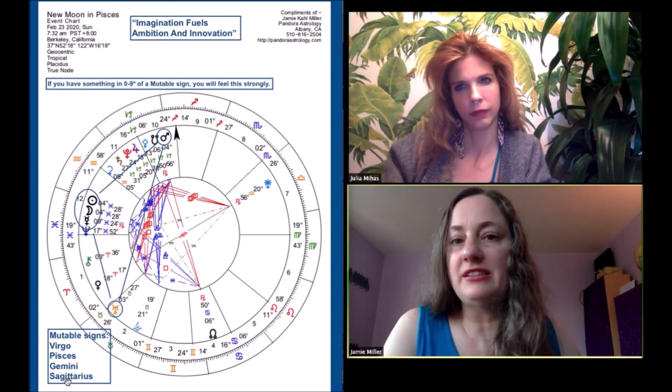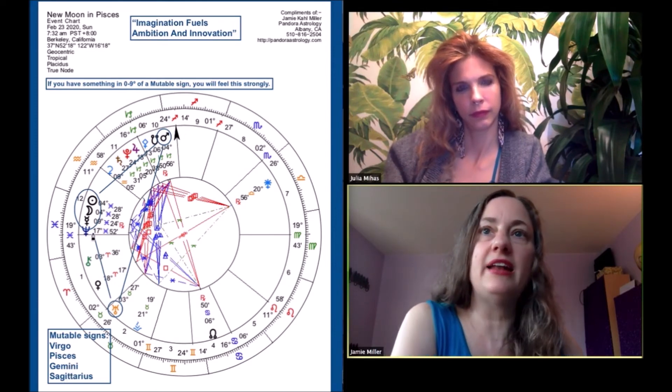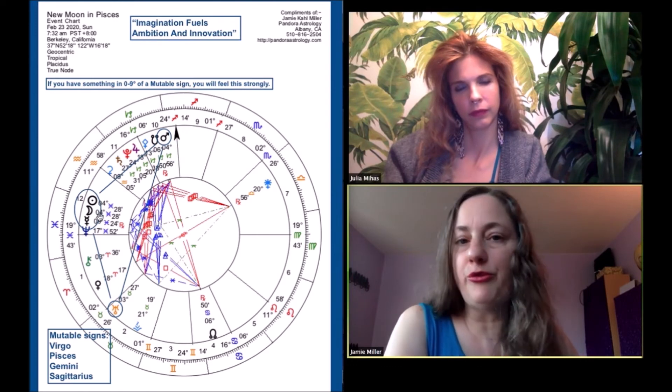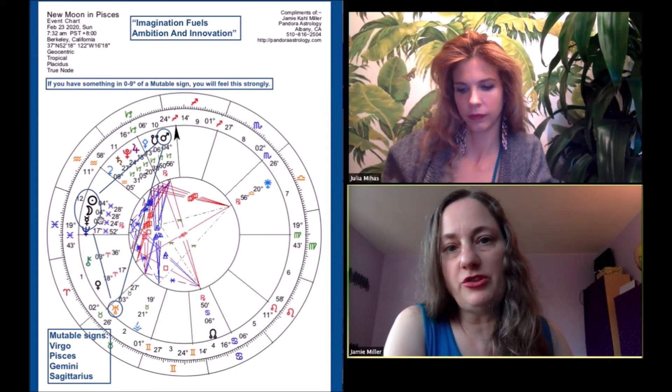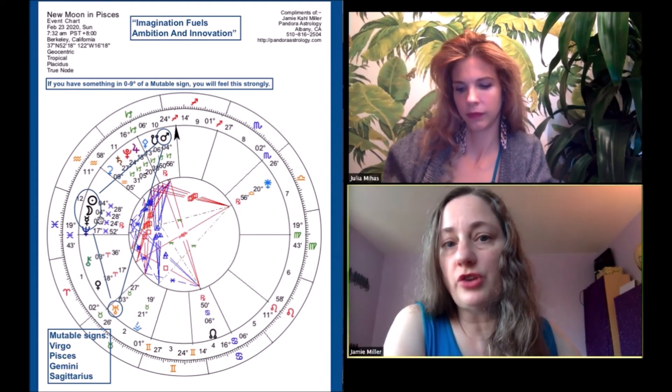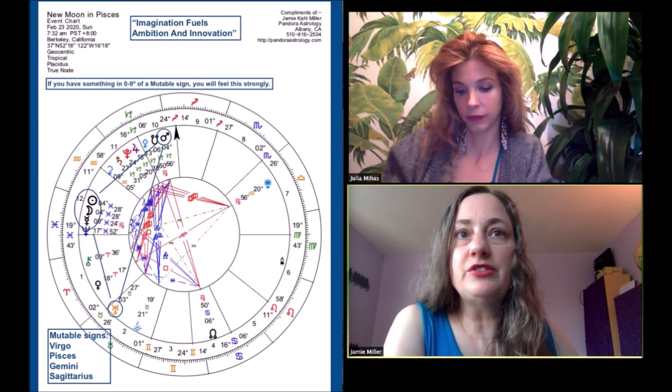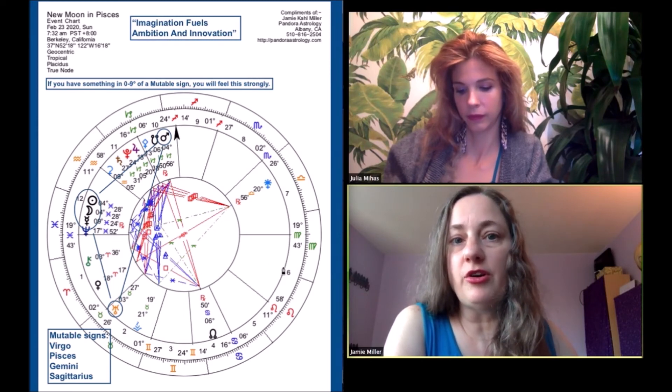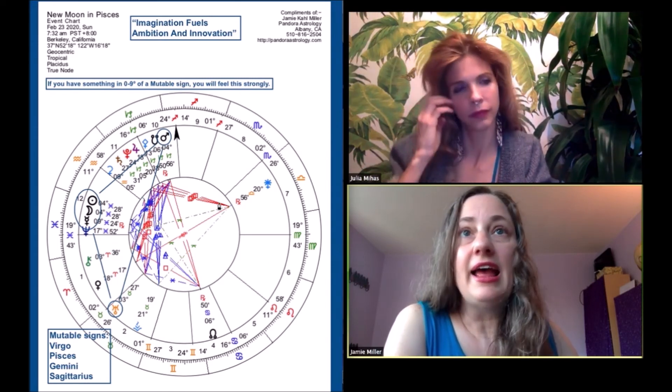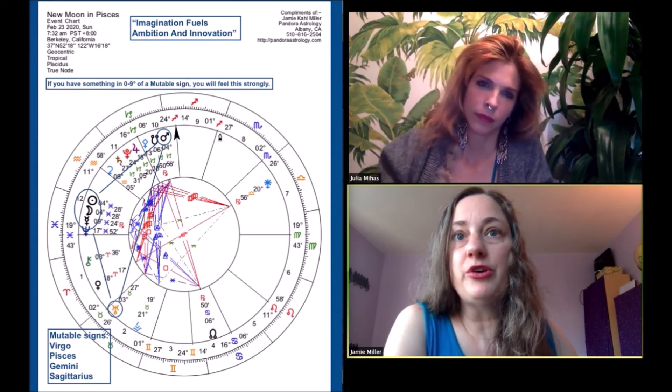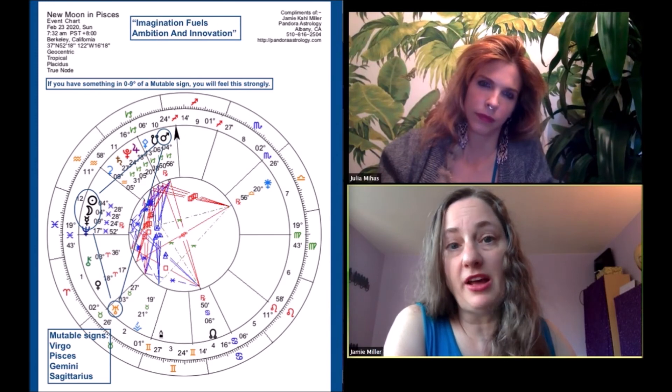And I'm going to take this little box out. This is what the mutable signs are, Virgo, Pisces, Gemini, and Sagittarius. And the reason is that this moon hitting four degrees of Pisces, well, obviously, if you have something near to it in your chart, that part of you is going to feel this transit. But even if you have something across from it in Virgo, around four degrees of Virgo, that part of you is going to feel it. And similarly, things around four degrees of Sagittarius or Gemini.